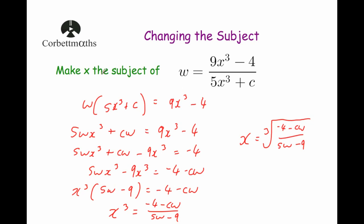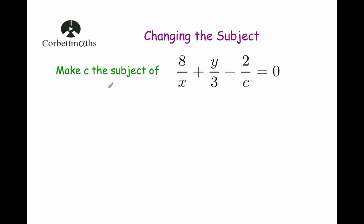Whenever you're doing these questions, you might get the answer in a slightly different format. For instance, when I got to the stage of subtracting 9x cubed from both sides, I could have instead subtracted 5wx cubed from both sides and brought the x's over to the right hand side rather than the left. What you would have underneath the cube root sign would look slightly different, but this is correct. Okay, let's have a look at our next question.